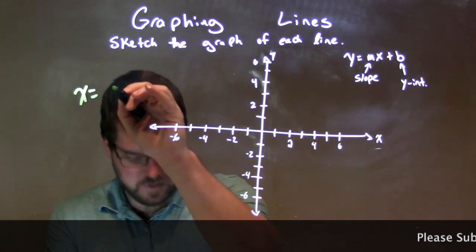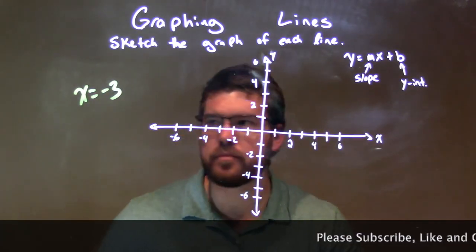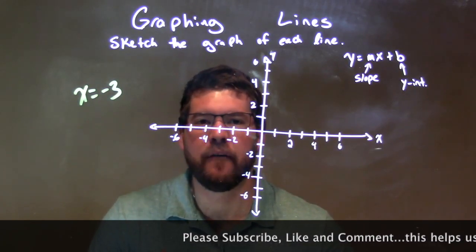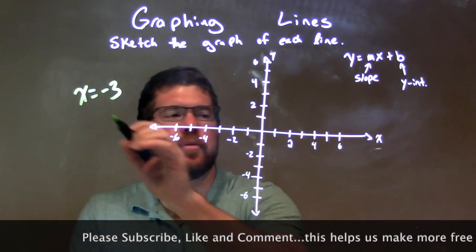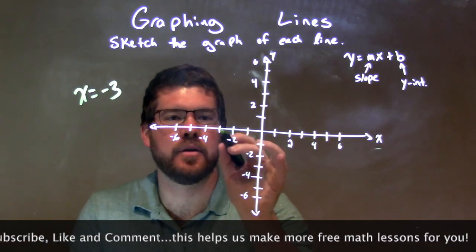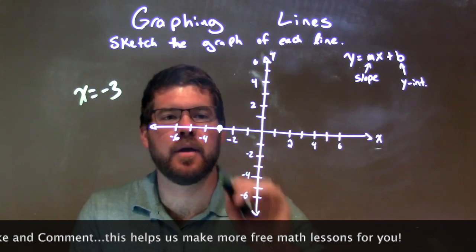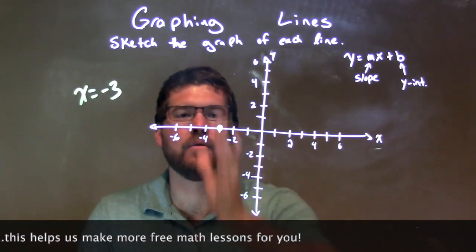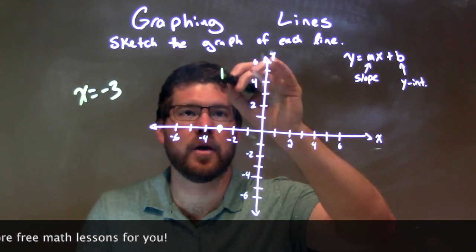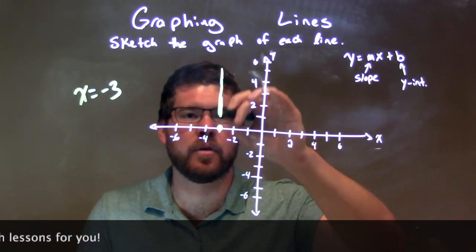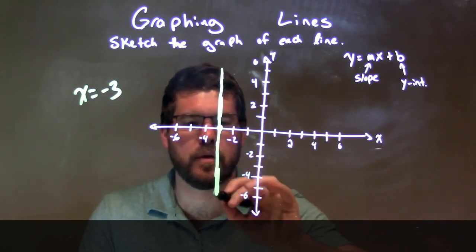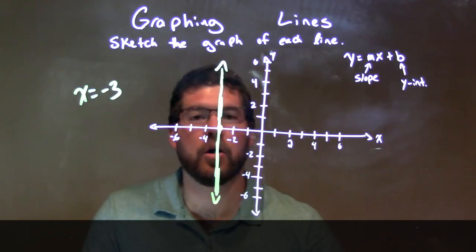x equals negative 3. When we see x equals a number and that's it, that is a vertical line. At negative 3 we cross the x-axis, so x is negative 3 right there — put a dot right there. From there, we just make a vertical line that goes through where x is negative 3. Fairly simple once you know how to do it. And there we have our graph.